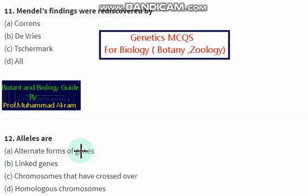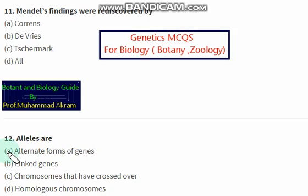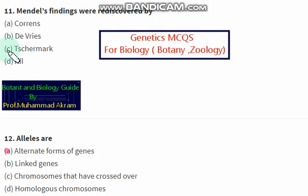Alleles are the alternative forms of genes — this is the right option A. Mendel's findings were rediscovered by — option C is the right answer.